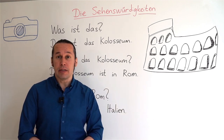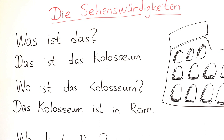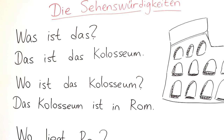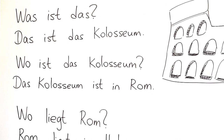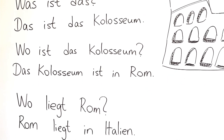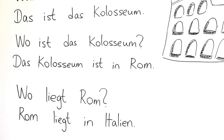I want you to repeat after me, please. Was ist das? Das ist das Colosseum. Wo ist das Colosseum? Das Colosseum ist in Rom. Wo liegt Rom? Rom liegt in Italien.